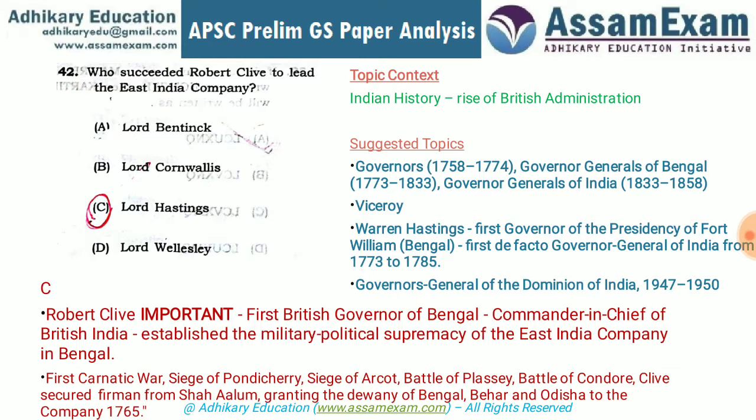Clive captured Pondicherry from the French, took Arcot from other rulers, and led British forces at the Battle of Plassey and Battle of Wandiwash. Importantly, he obtained a firman from Mughal Emperor Shah Alam granting the East India Company the Diwani rights over Bengal, Bihar, and Odisha — the first provision giving the British administrative power in India and the foundation of British administration.